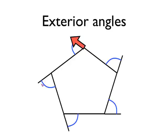The next thing I'm going to do is rotate that arrow anticlockwise through the second exterior angle, like so. And then without changing its direction, I'm going to move it to the third vertex. And then I'm going to rotate it through the third exterior angle and move it to the fourth vertex.